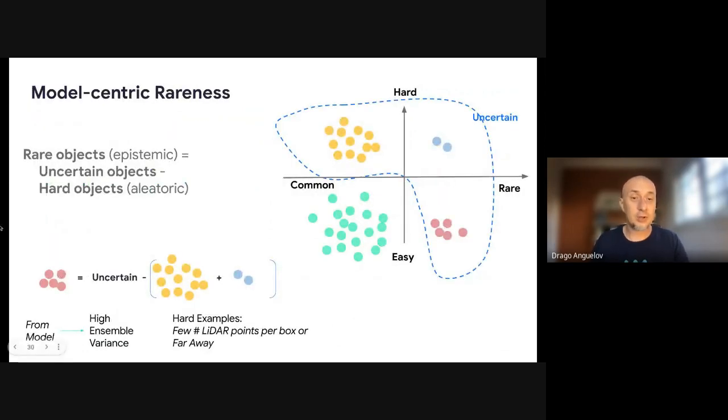So one of them we call model-centric rareness. The key here is to look at all the set of uncertain examples. And so they can be all in all these three quadrants. And so we take the uncertain examples, which we can mine by, for example, an ensemble of detectors and seeing that wherever they disagree, you have uncertainty.